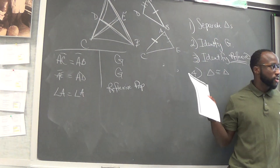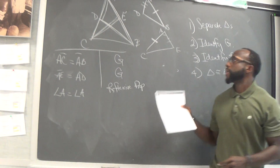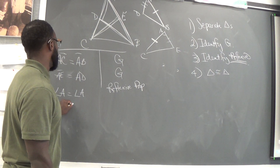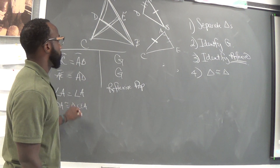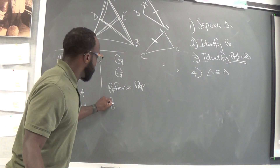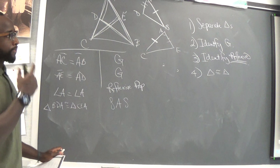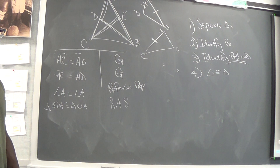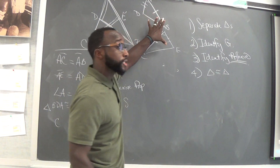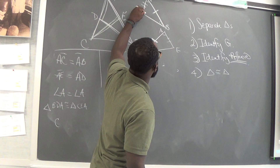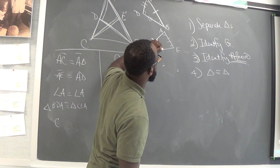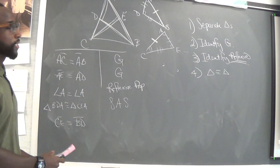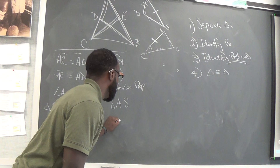Do we have enough to say that these triangles are congruent? Yes. So let's say triangle BDA is congruent to triangle CEA. Why? Side-angle-side postulate. Now we needed to prove that CE and BD are congruent. Since the triangles are congruent, CE is congruent to BD because of CPCTC — corresponding parts of congruent triangles are congruent.